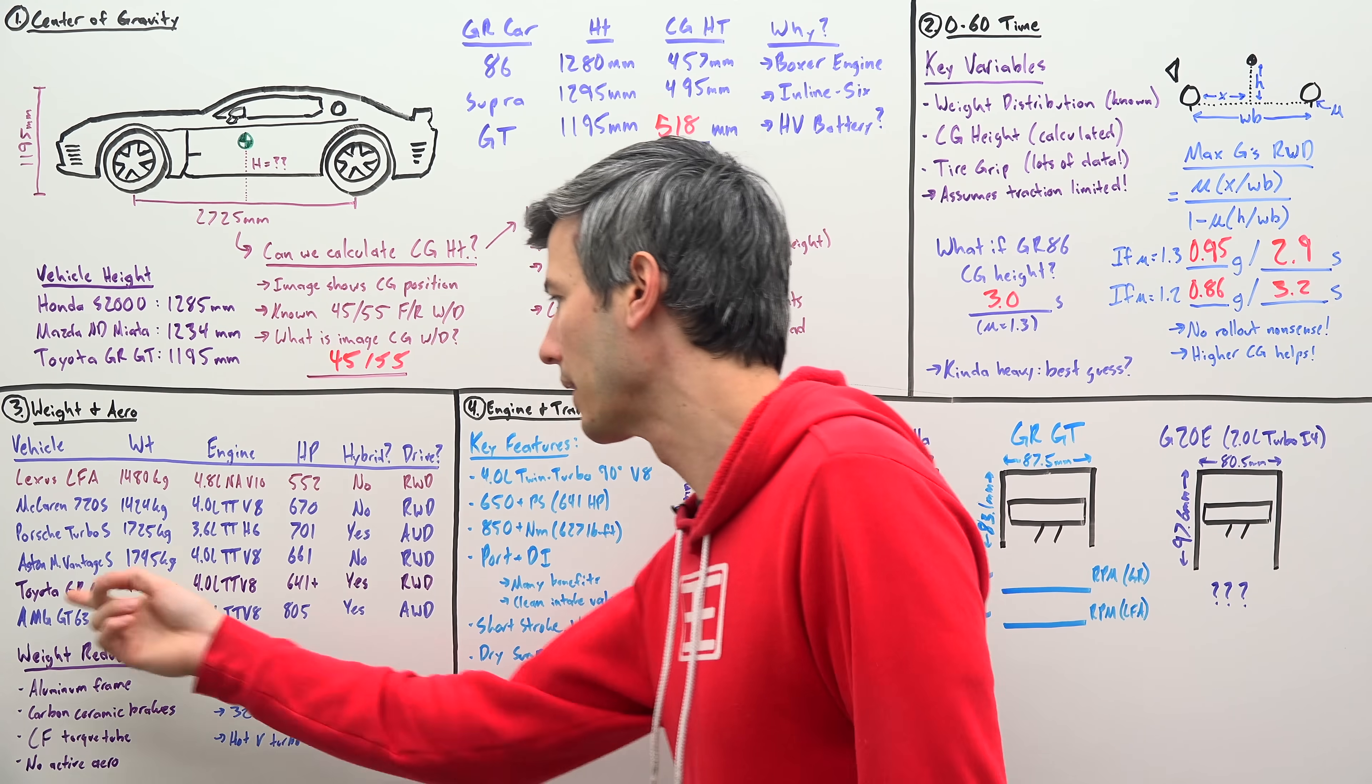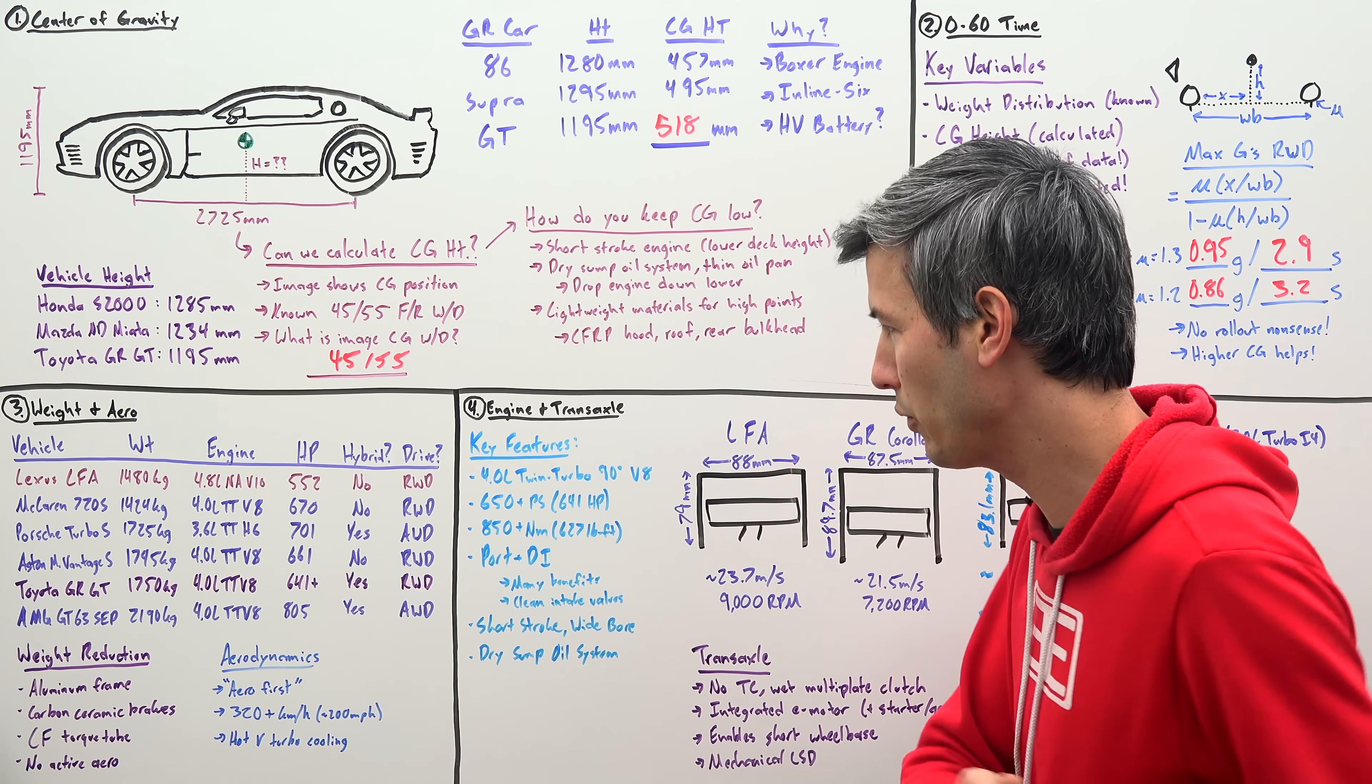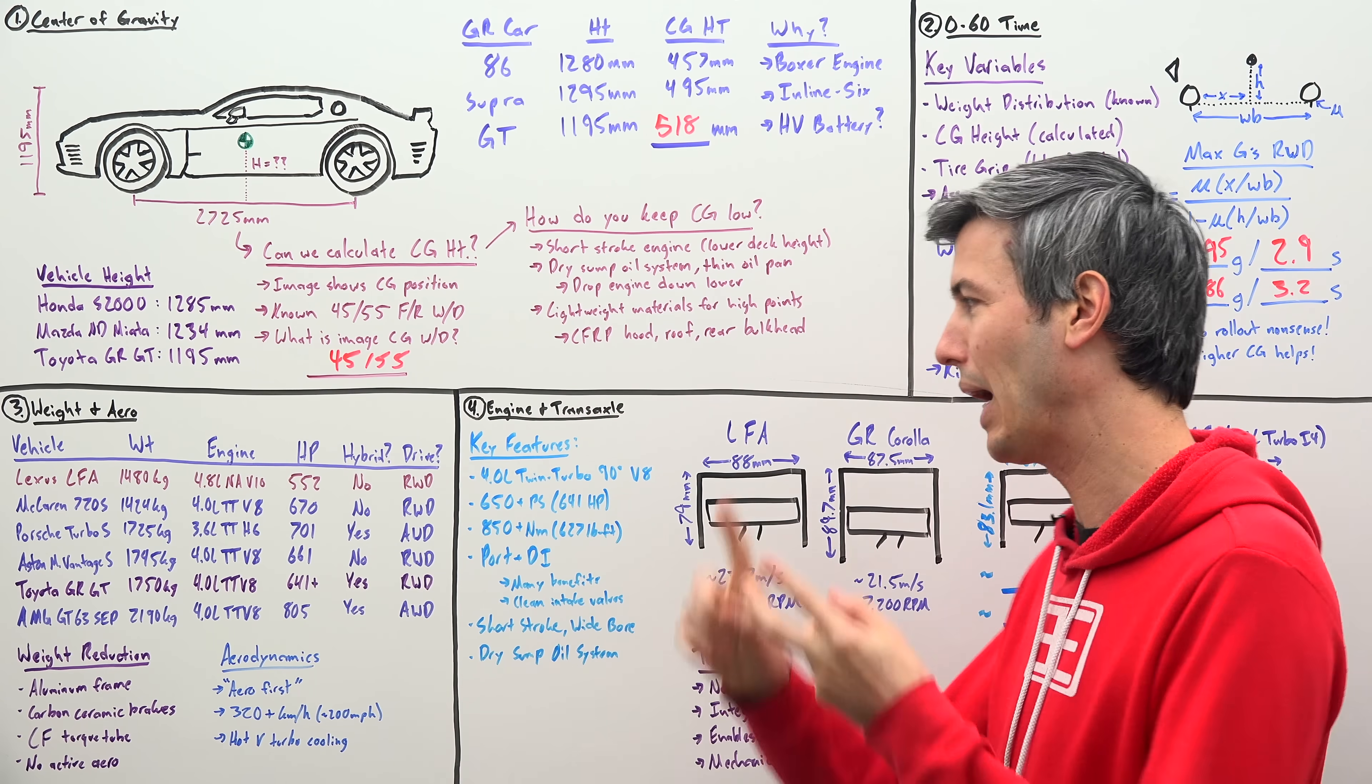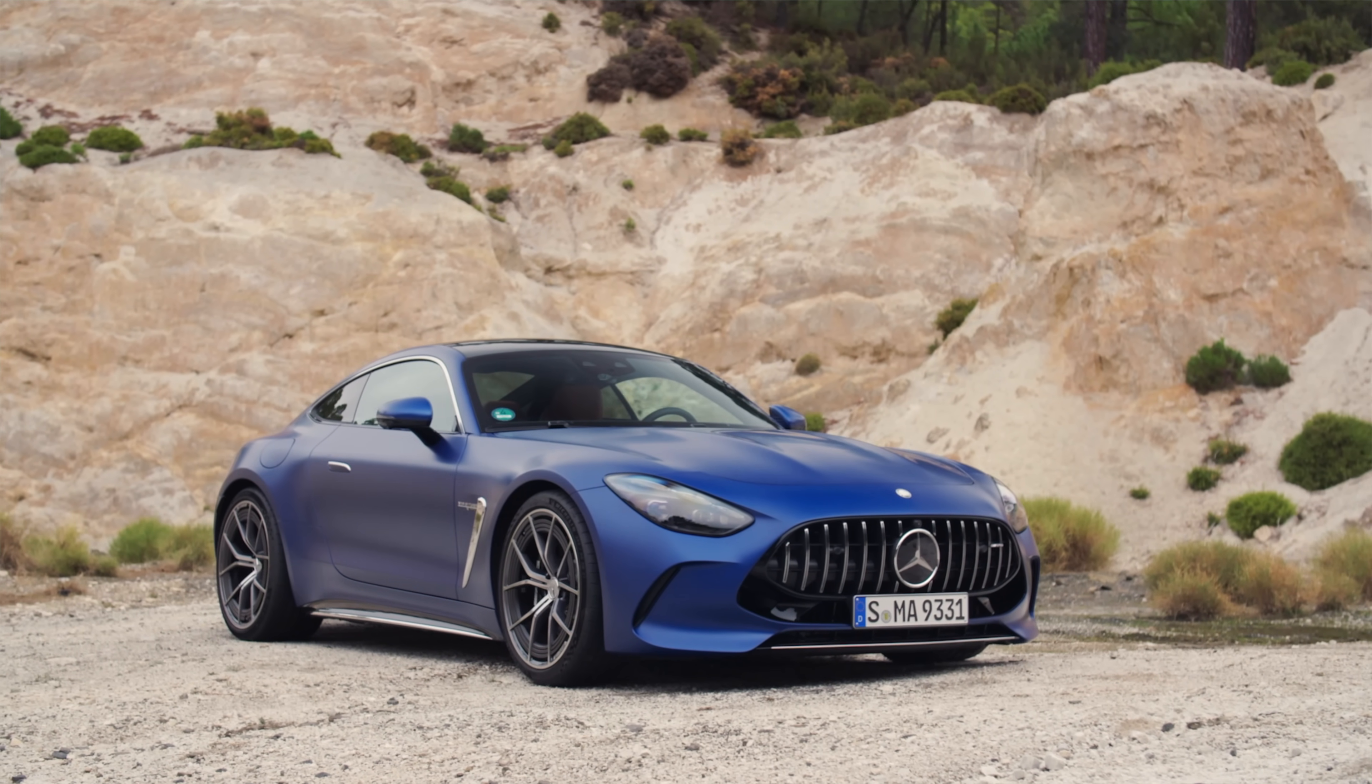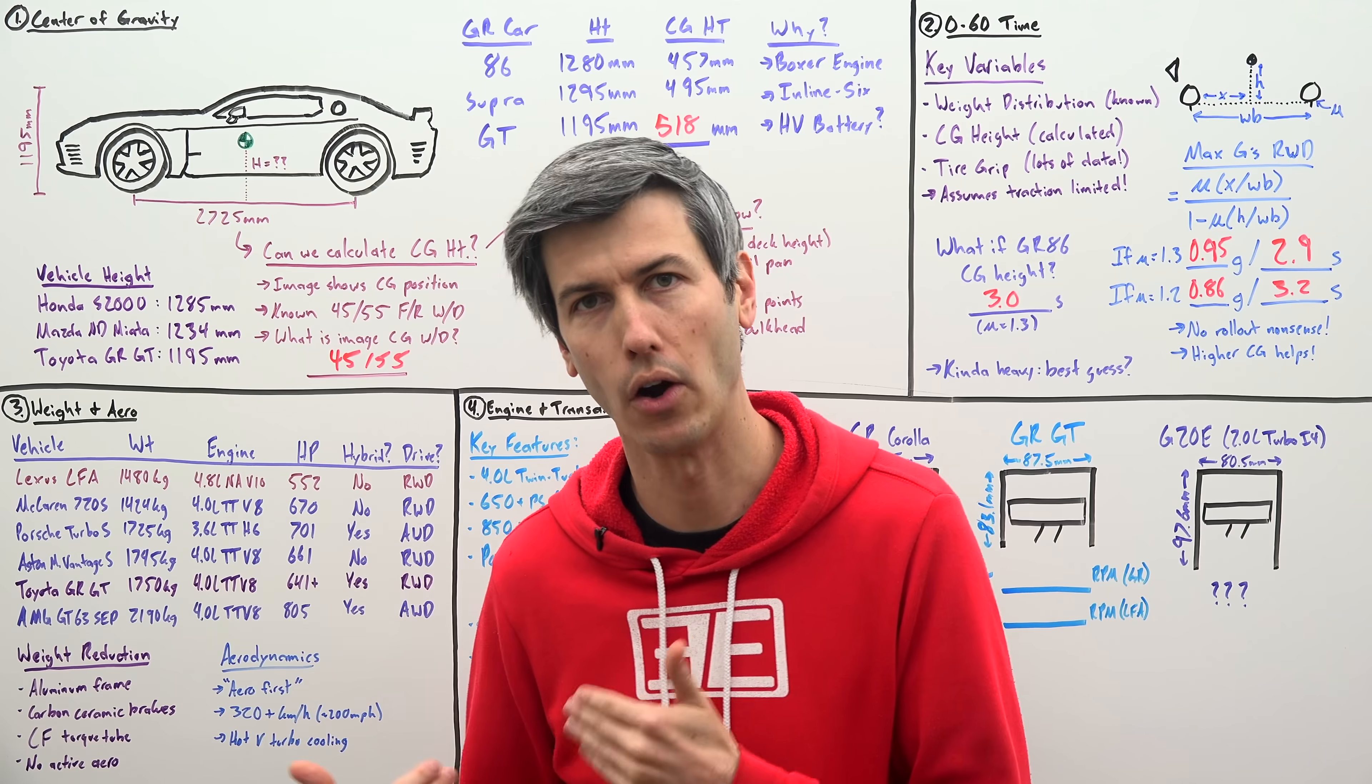Now, one example out there, the AMG GT 63 SEP QRS TUV also has a 4 liter twin turbo V8, way heavier than the GR GT, but way more power, way more torque, it does have a powerful hybrid system, and it's also all-wheel drive versus rear-wheel drive like the GR GT. So realistically, the thing is kind of heavy. But that's not to say that Toyota hasn't gone to lengths to remove weight from this car.